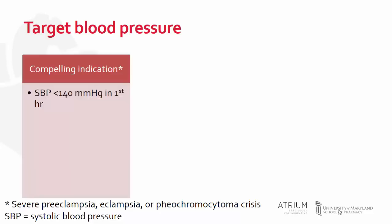In patients presenting with a compelling indication, which includes severe preeclampsia, eclampsia, or pheochromocytoma crisis, the systolic blood pressure should be reduced to less than 140 millimeters of mercury in the first hour.